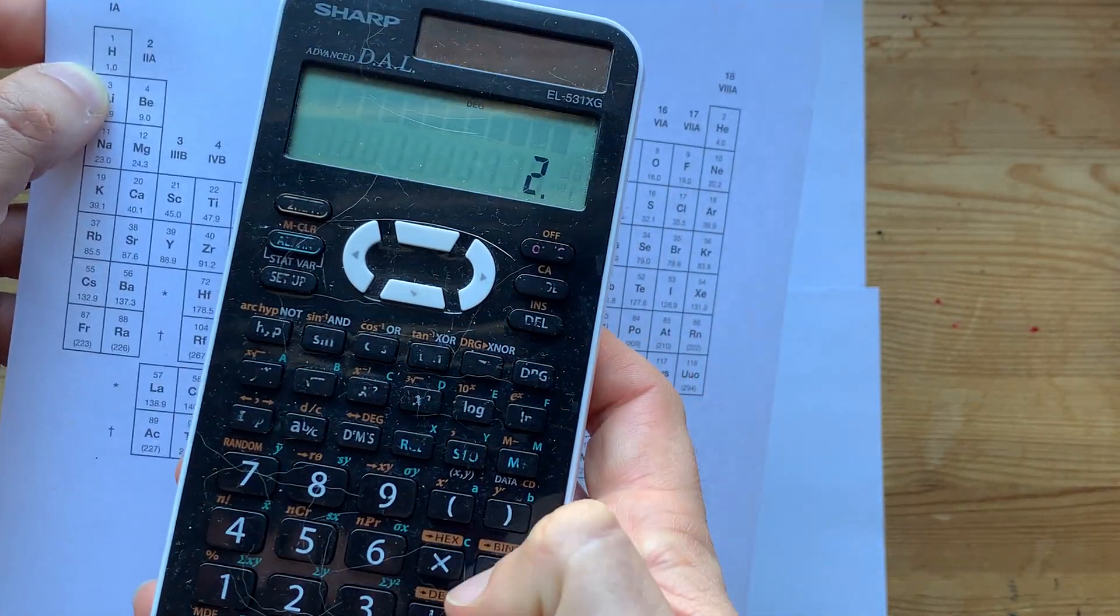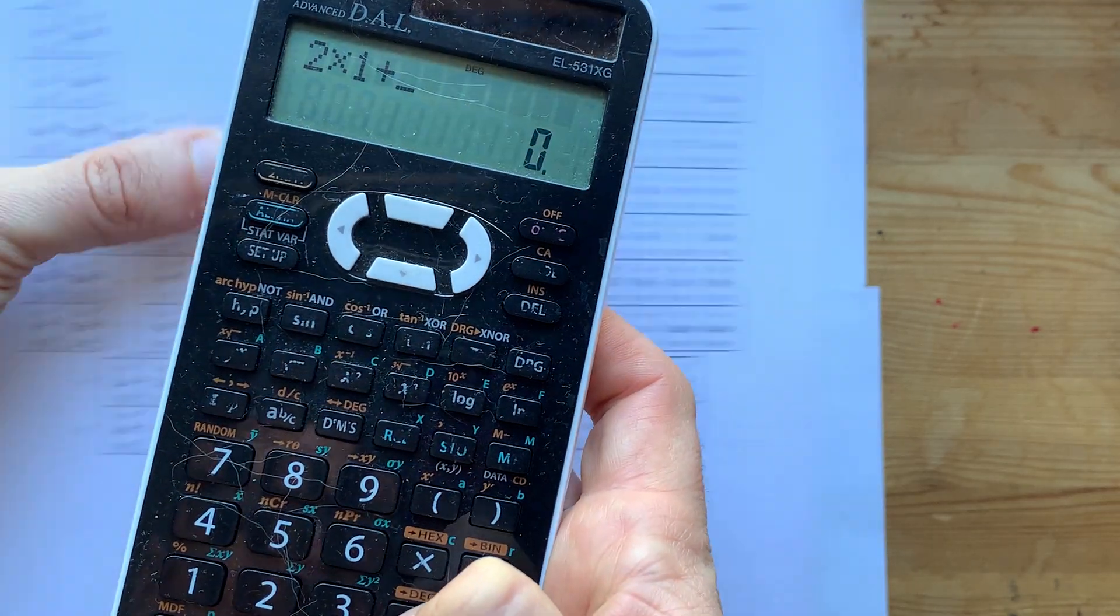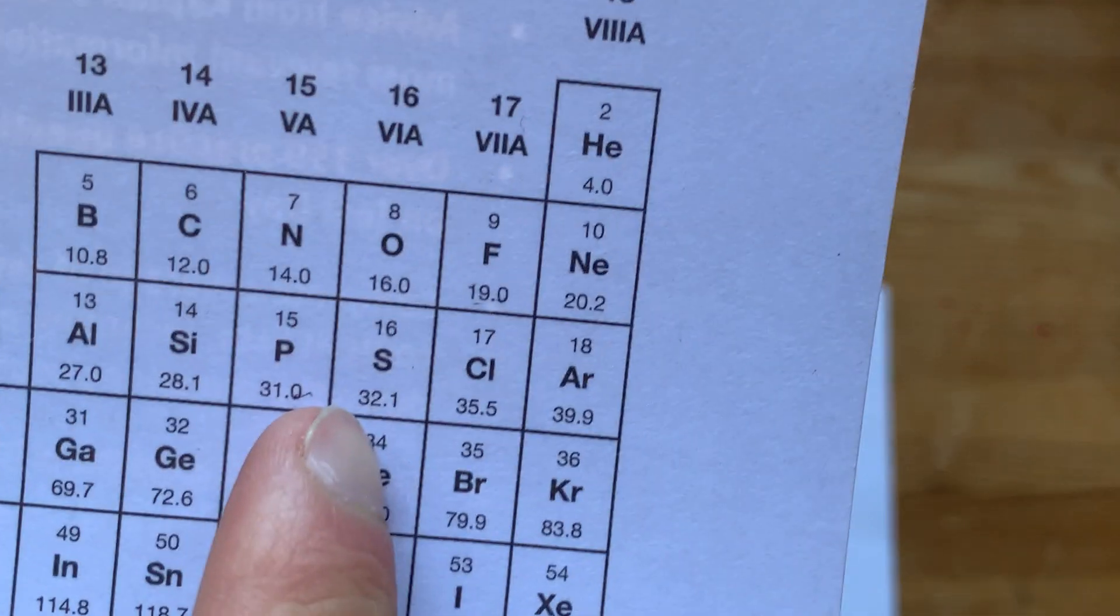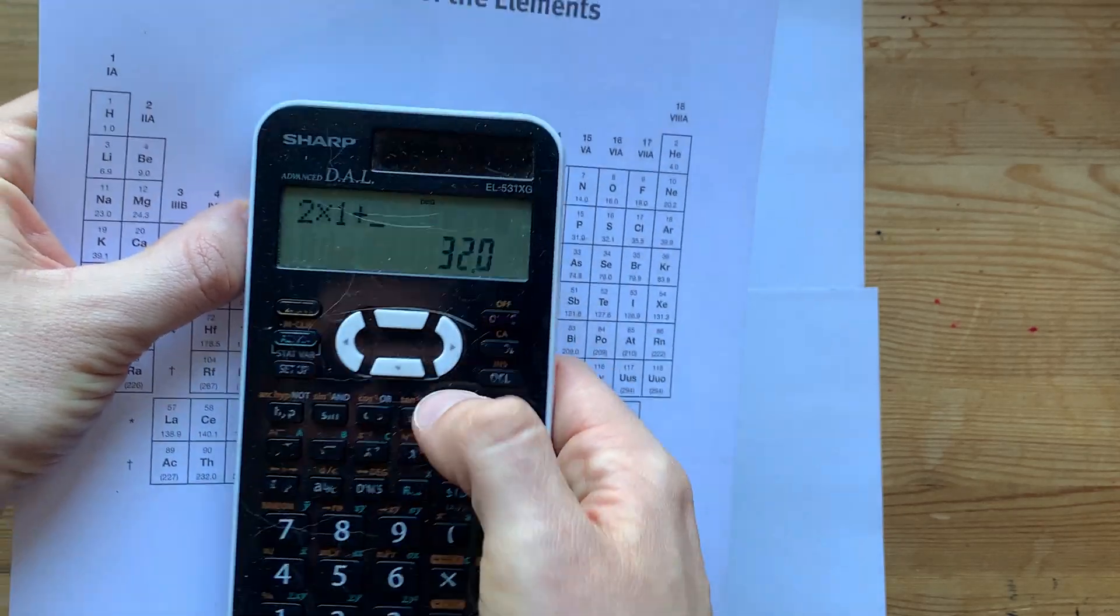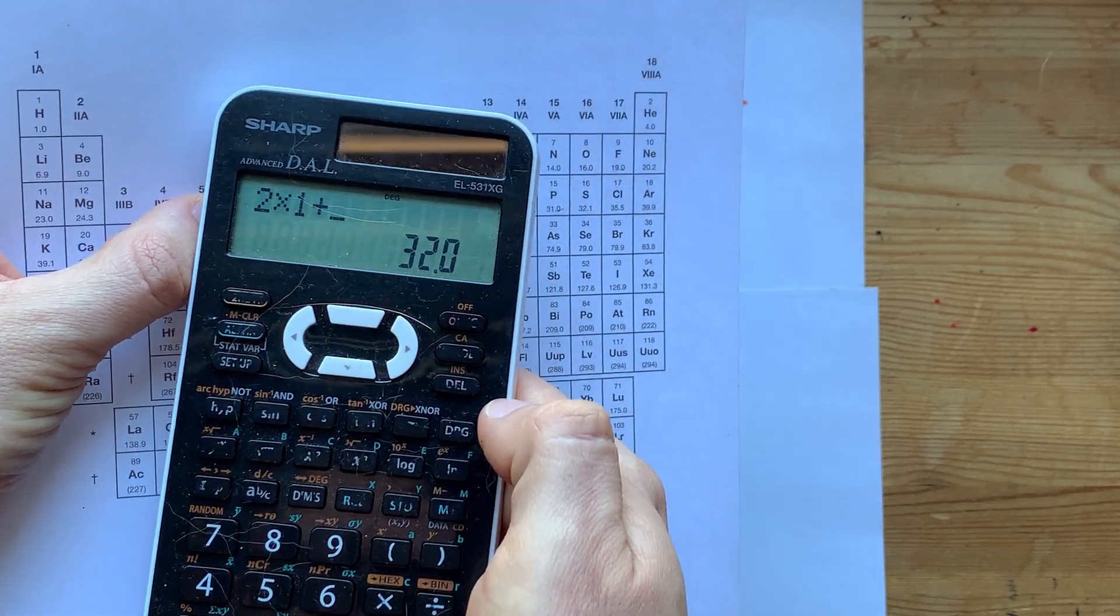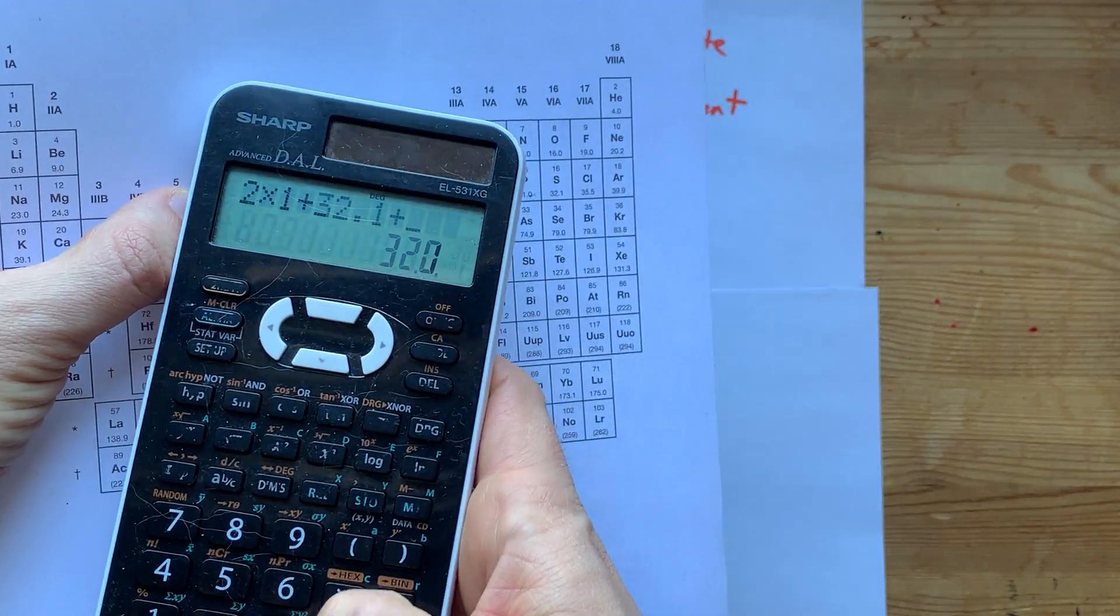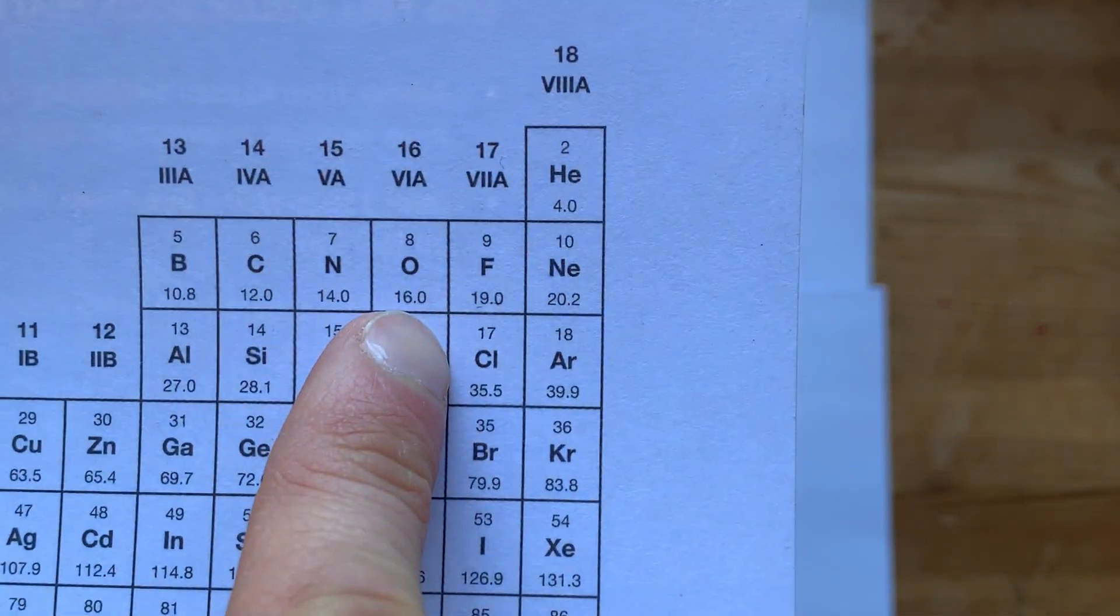You have two hydrogens along with one sulfur. I'm just going to make sure that I use the 0.1 that the periodic table I'm using gave me.